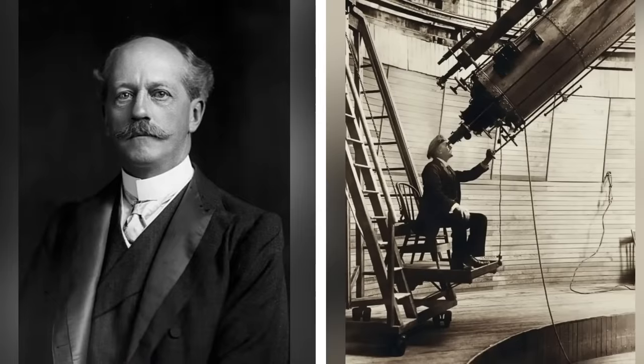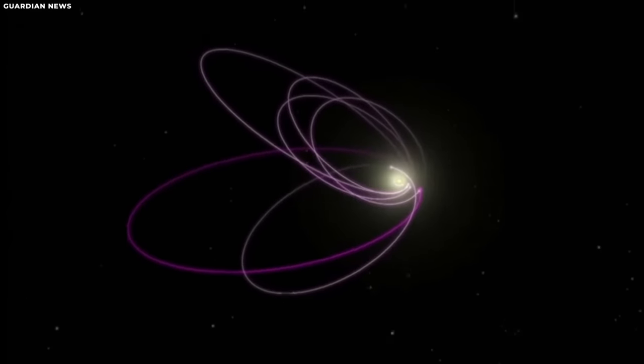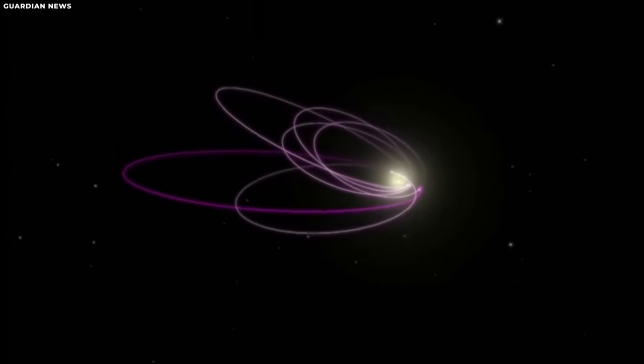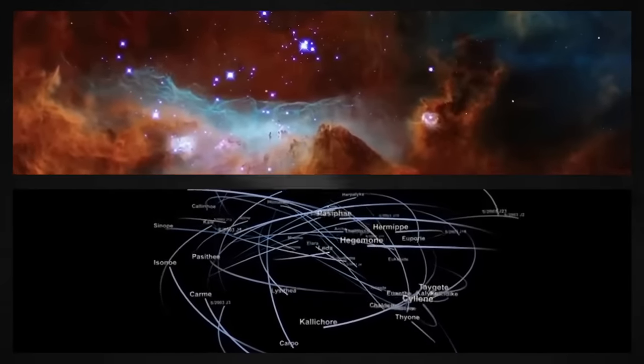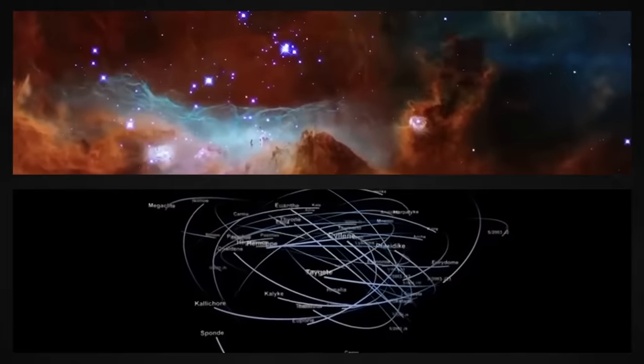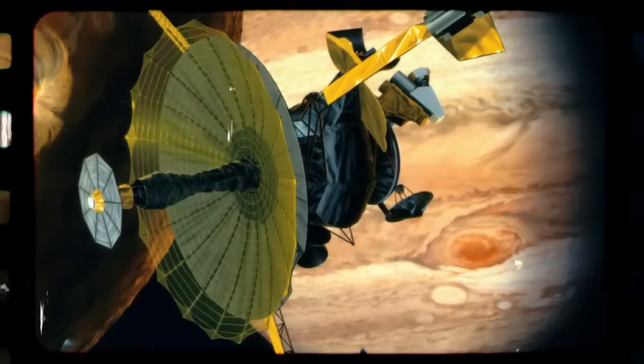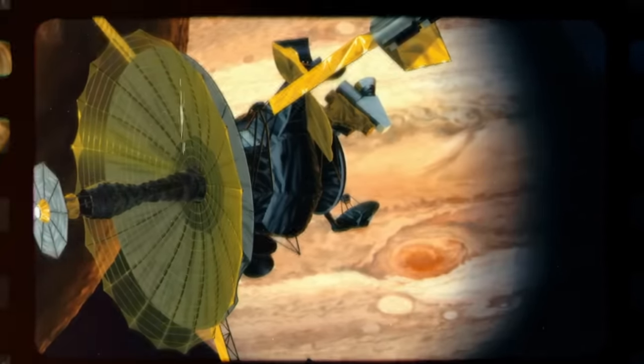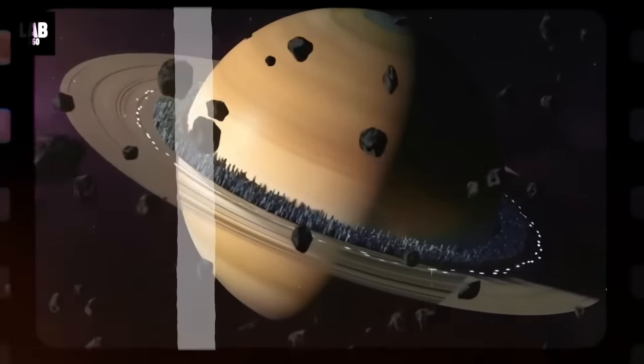Percival Lowell, a prominent 19th-century travel writer and businessman, was among those who passionately believed in the existence of a ninth planet within our solar system. Although Lowell didn't live long enough to witness his theory confirmed, he left behind a generous bequest of one million dollars in his will. This substantial sum was earmarked to support future missions to locate Planet X, prolonging the enduring quest for this enigmatic celestial body.